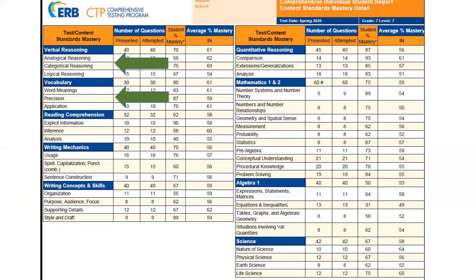Let's look at page 2 of the Comprehensive Individual Student Report. This page breaks down each subtest into smaller classifications. Under verbal reasoning, students are tested in analogical reasoning, categorical reasoning, and logical reasoning. Under vocabulary, students are tested in word meaning, precision, and application. The student was presented with 40 verbal reasoning questions and attempted all 40. The number of questions presented and attempted should always be the same unless your student ran out of time on a subtest, as the CTP is a timed test.